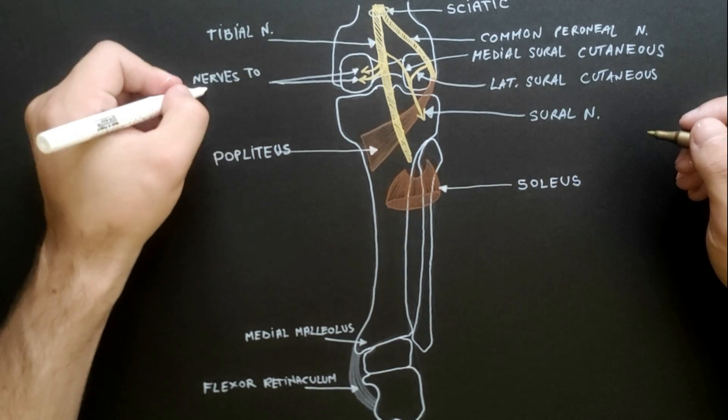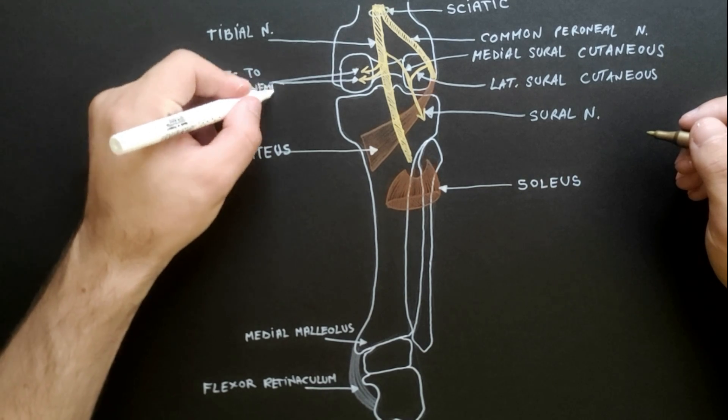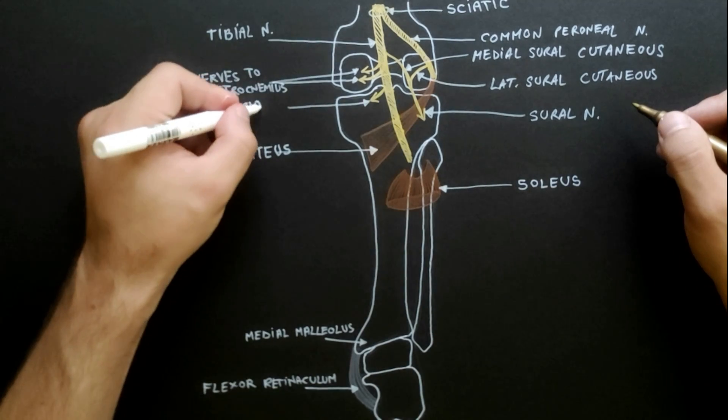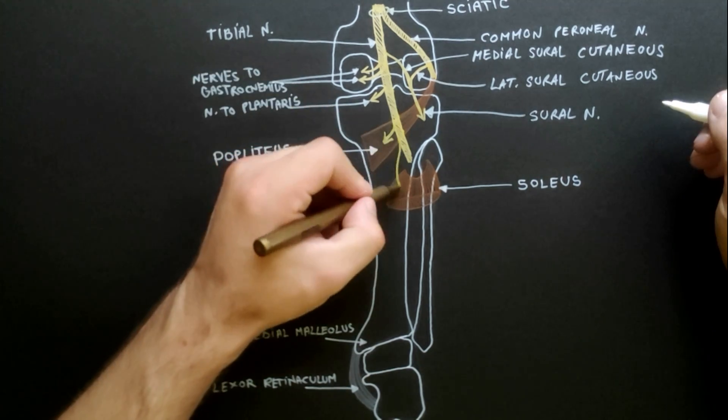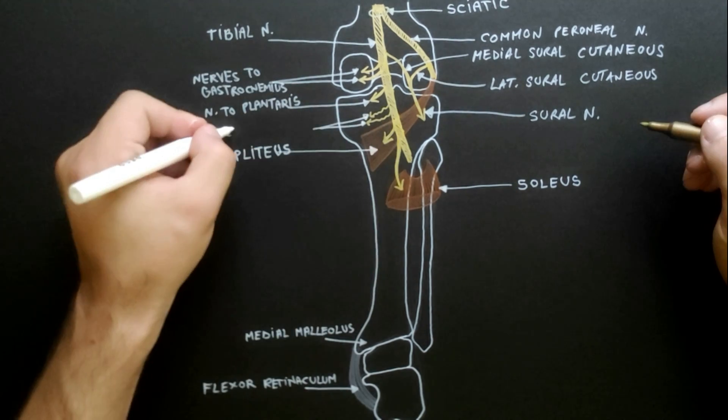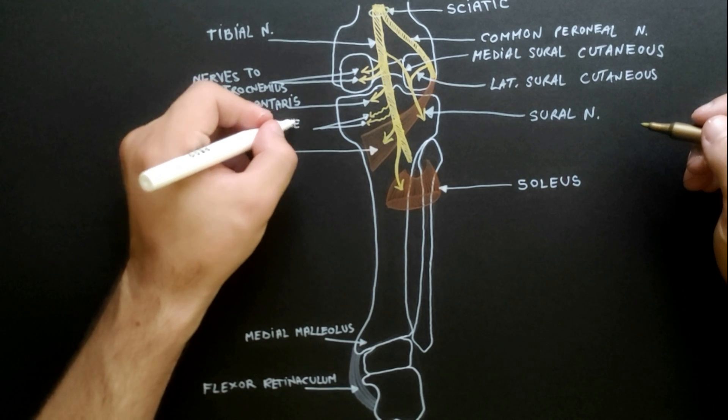Nerves to medial and lateral heads of gastrocnemius, nerve to plantaris, nerve to popliteus, nerve to soleus and a few articular branches to knee joint.